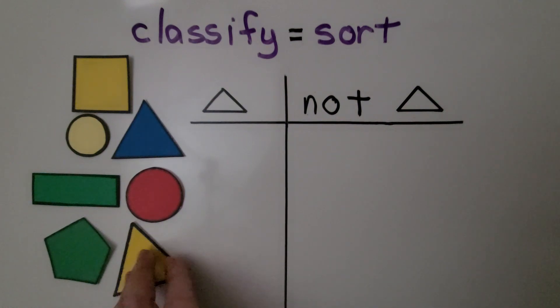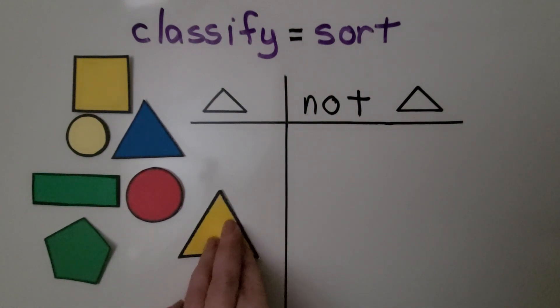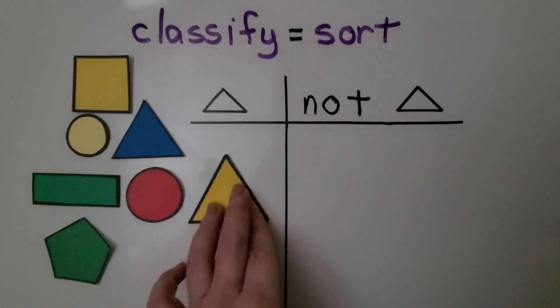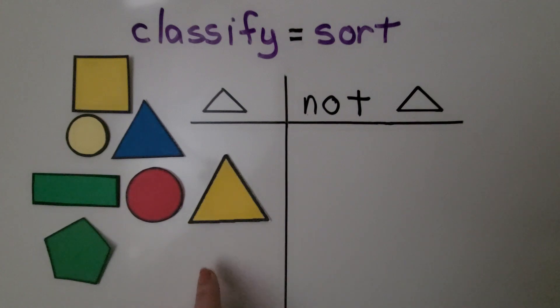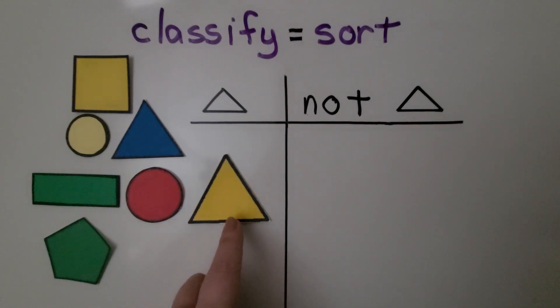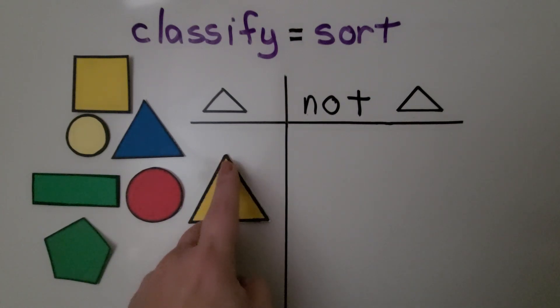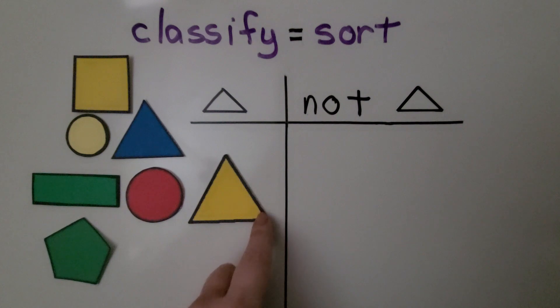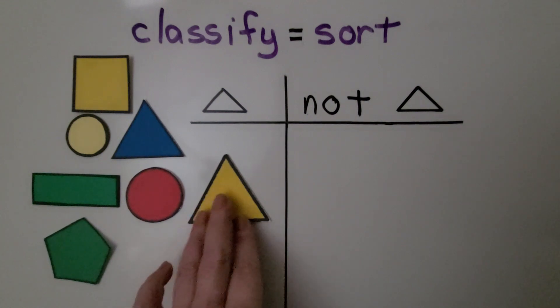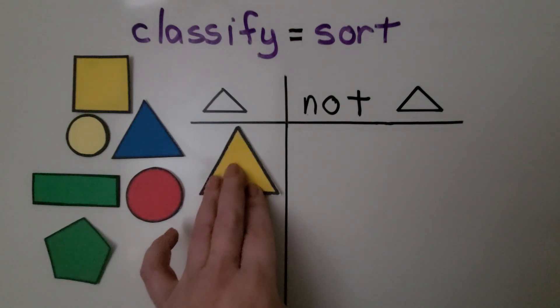Is this shape a triangle? It has one, two, three sides and one, two, three corners. Yes, that's a triangle.